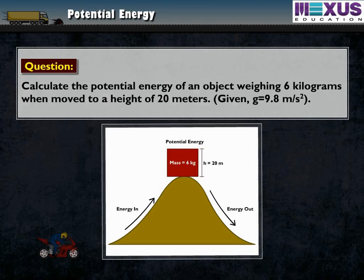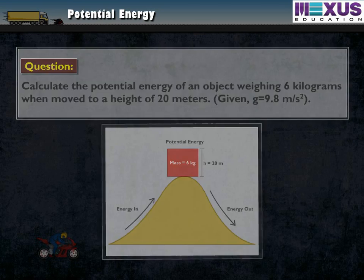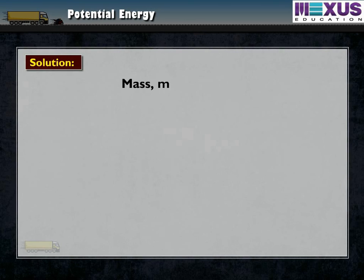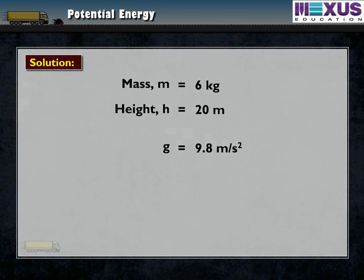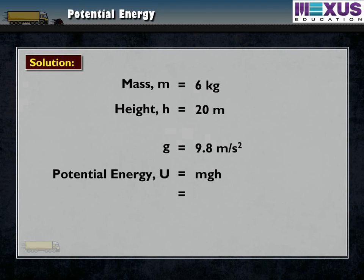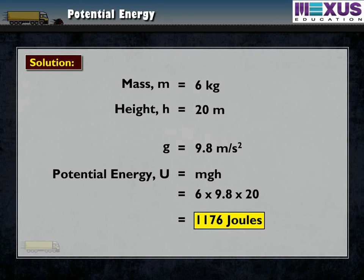Question: Calculate the potential energy of an object weighing 6 kilograms when moved to a height of 20 meters. Given acceleration due to gravity = 9.8 m/s². Solution: Given mass M = 6 kg, height H = 20 m, gravitational acceleration g = 9.8 m/s². Therefore, potential energy U = MGH = 6 × 9.8 × 20 = 1176 joules.